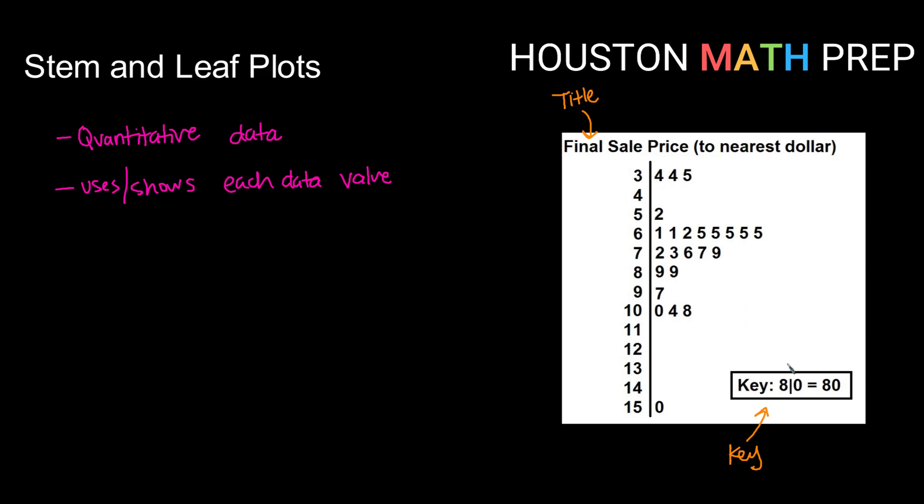So it could be the case if we had a different key that 8 bar 0 meant 8.0. So it's super important that we put a key on every stem and leaf plot that we create.